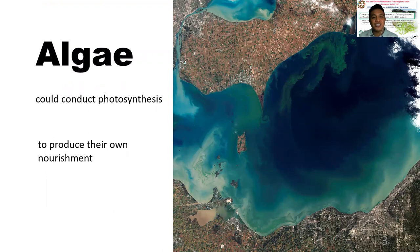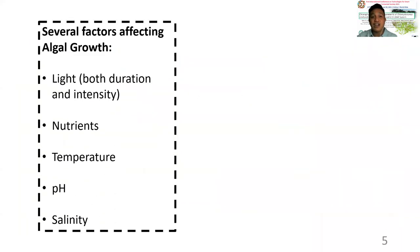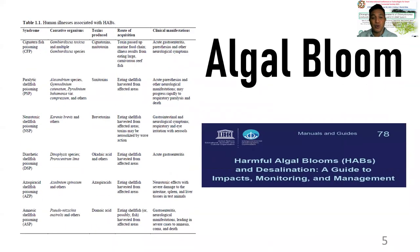As we all know, algae can conduct photosynthesis, producing their own nourishment. There are different commercial uses of algae such as for biofuel, bioplastics, animal feeds and fertilizers, and food. However, there are several factors to consider for algae growth: light — both duration and intensity — nutrients, temperature, pH, and salinity. Changing one of these factors may cause an algal bloom.